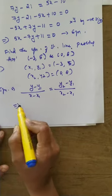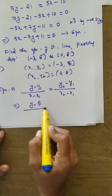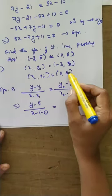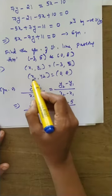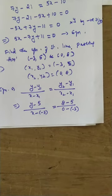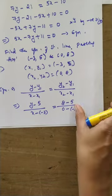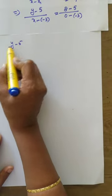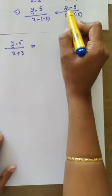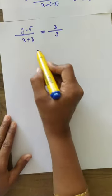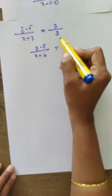Substituting: y minus 5 divided by x minus (-3), that is x plus 3, equals 8 minus 5 divided by 0 minus (-3), which is 0 plus 3, equals 3. So y minus 5 divided by x plus 3 is equal to 3 divided by 3, which equals 1.